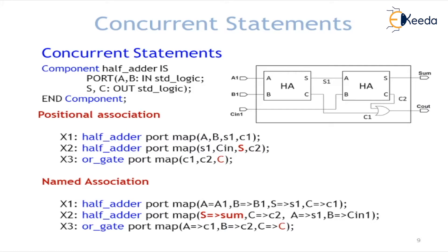We will use the example of a full adder built from two half adder designs. We declare a component named half_adder whose ports are exactly the same as the entity of the half adder. The half adder program is already written, executed, simulated, and kept in the same directory. Now let us look at positional association. Positional association and named association both happen inside the architecture. In positional association the component instantiation syntax starts with a label, then the component name half_adder, then the port map keyword.